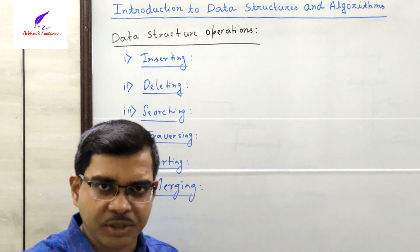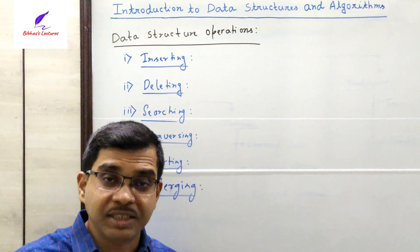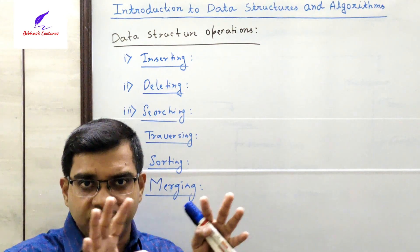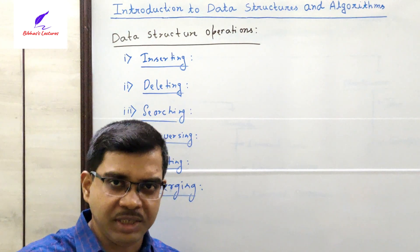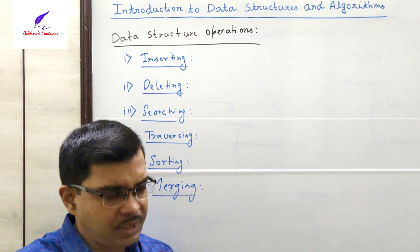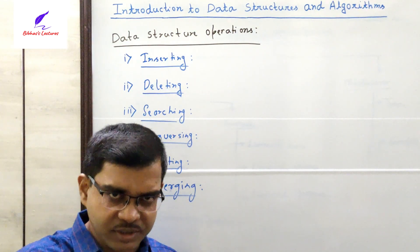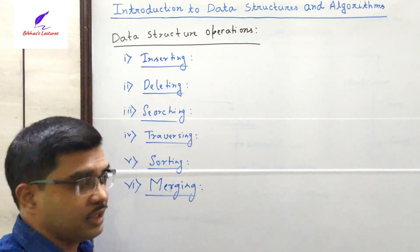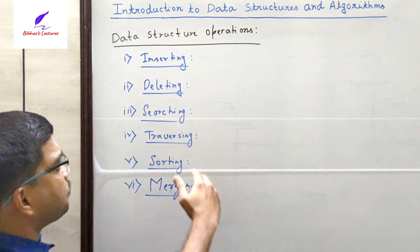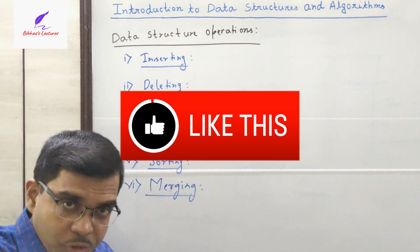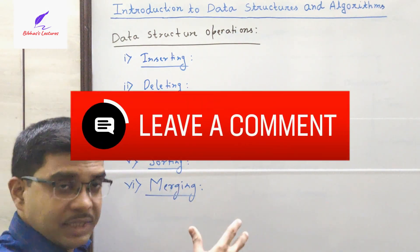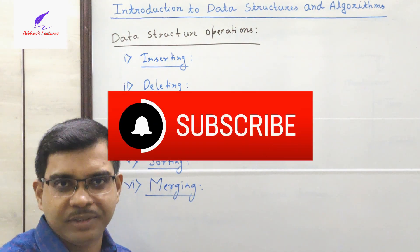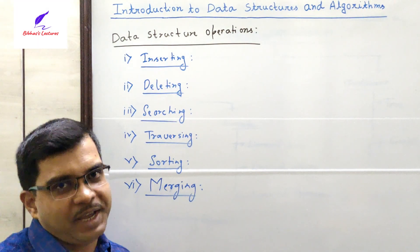So, my dear students, today I have discussed the definition of data structure and why data structures are required, then the basic types and classification of data structures, the application areas where we can apply data structures, and finally the six various operations we can perform on data structures. In my upcoming videos I will discuss each and every operation — how you can perform these operations in data structures with the help of programs. I hope you enjoyed this lecture. Thanks for watching, please take care, have a nice day, thank you.